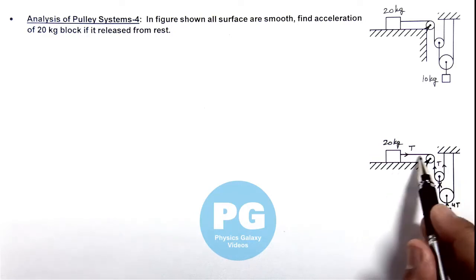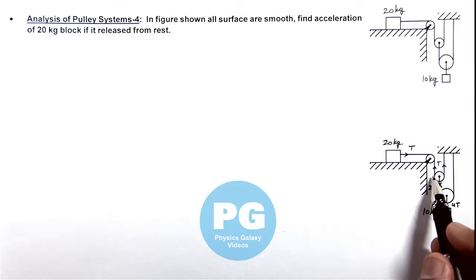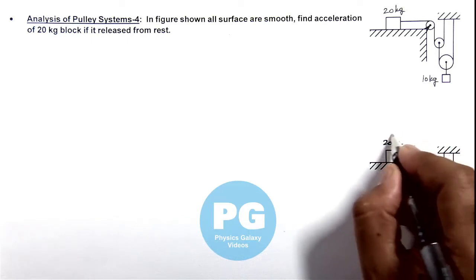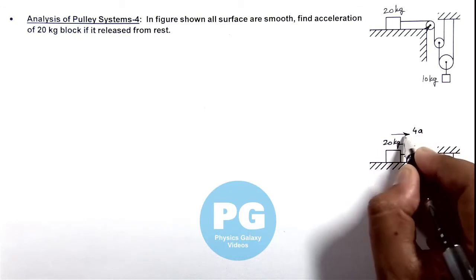And again, as the string is fixed over here, this string will be pulled by acceleration twice that of this pulley, that is 4ay. So we can write this 20 kg block is moving with acceleration 4ay.